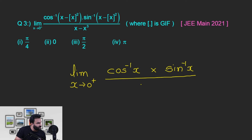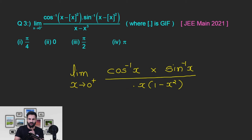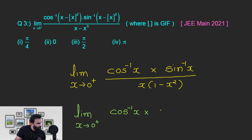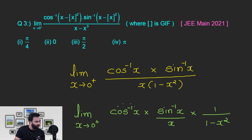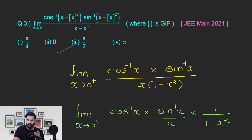Denominator में x common निकाल लेता हूँ। अब जो हमारी standard limit है — limit x tending to 0, sin inverse x upon x की value 1 आती है। तो limit लगाने पर cos inverse 0 = pi by 2, sin inverse x by x = 1, x = 0 है तो यह बन गया 1. pi by 2 into 1 into 1 — so the answer is pi by 2. बस समझ।